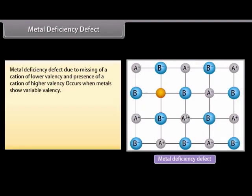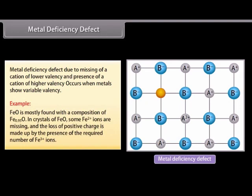Metal deficiency defect is due to the missing of a cation of lower valency and the presence of a cation of higher valency. It occurs when metals show variable valency. For example, FeO is mostly found with a composition of Fe₀.₉₅O. In crystals of FeO, some Fe²⁺ ions are missing and the loss of positive charge is made up by the presence of the required number of Fe³⁺ ions.